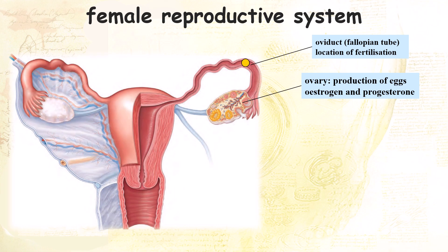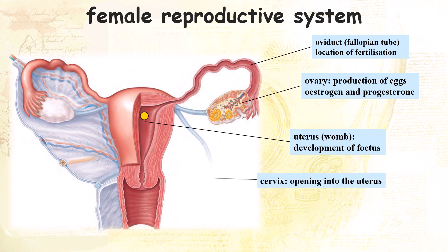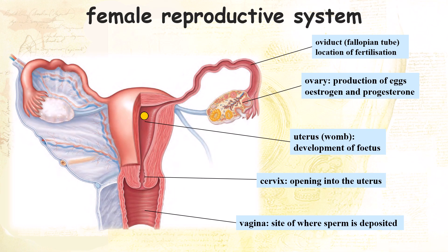The embryo will continue to move towards the uterus, where it will develop into a fetus. The opening of the uterus is the cervix, while the vagina, or birth canal, leads from the cervix to the outside and is where semen is deposited during copulation.